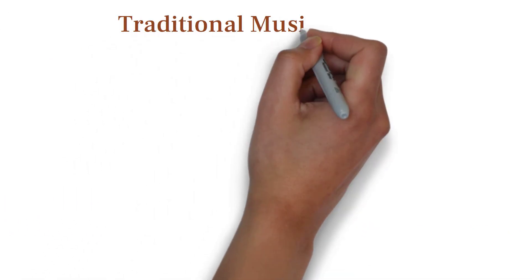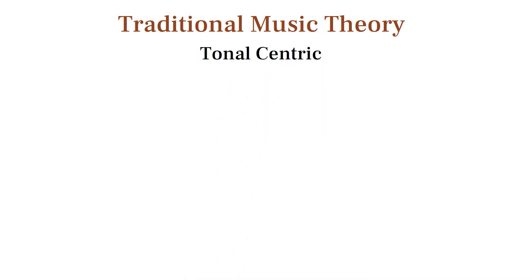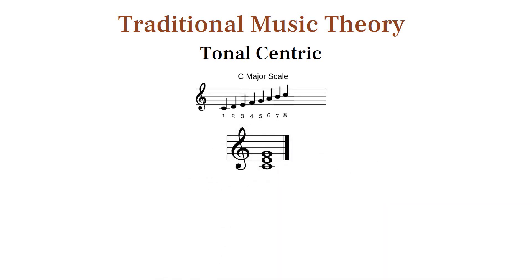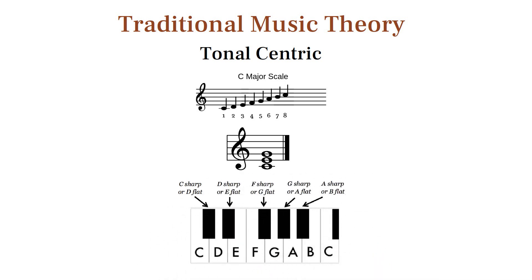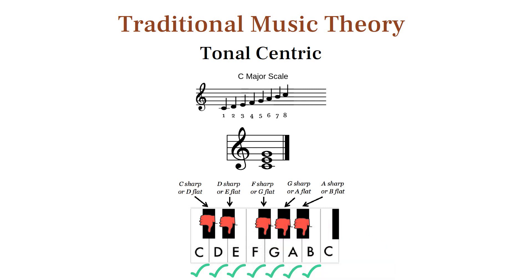Traditional music theory has what I call a tonal-centric perspective, which is to say that its concepts, and even its language, centers around the major scale and major chord. Ever notice how we only use 7 letters to label 12 different notes? Or how the layout of the piano is made to show us the C major scale using the white keys? That's because the whole system of traditional music theory uses the major scale and major chord as a standard for normalcy, and all the other notes as derivations.